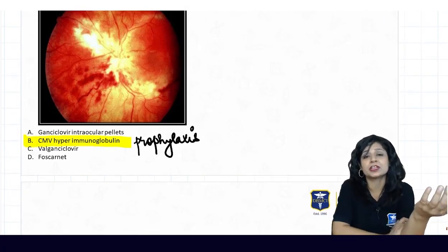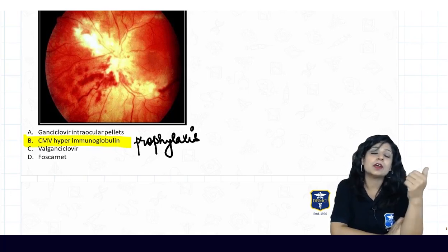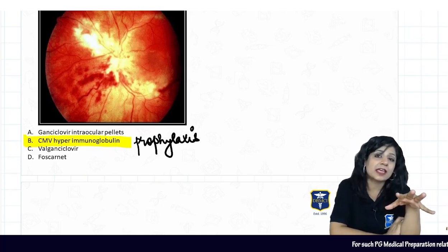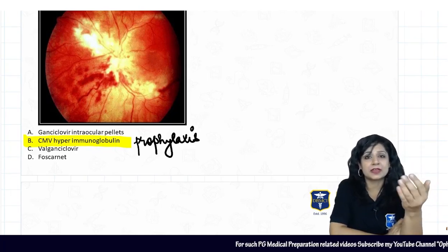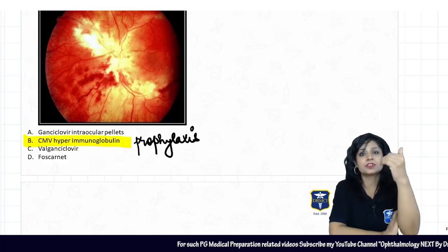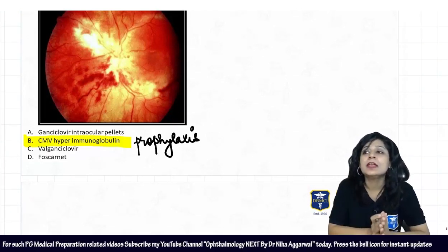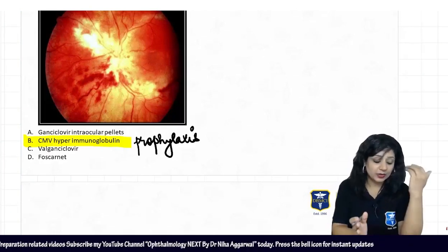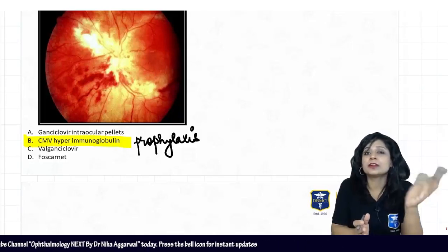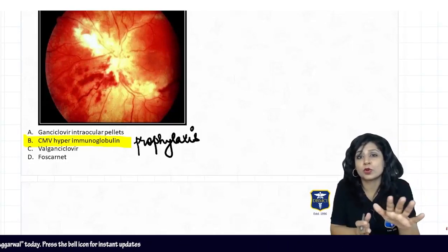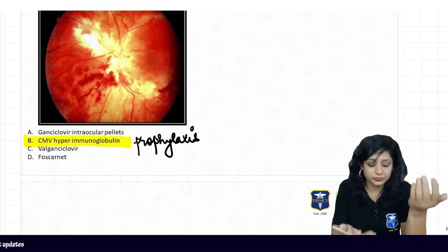Ganciclovir and valganciclovir are parts of the antiviral treatment. Once antiretroviral therapy is given, an immune reaction is expected to rise initially. You can also give foscarnet as an antiviral, but hyperimmunoglobulin is not given when actively treating the condition.